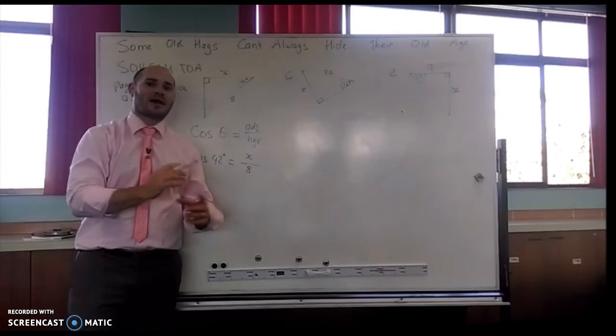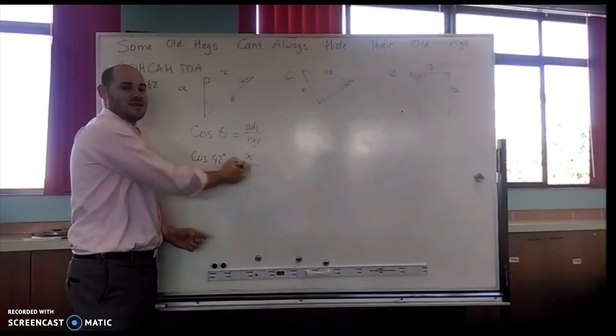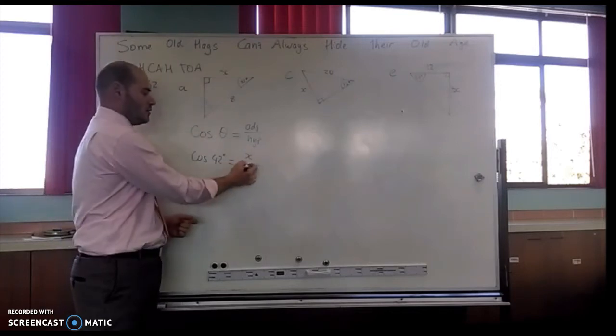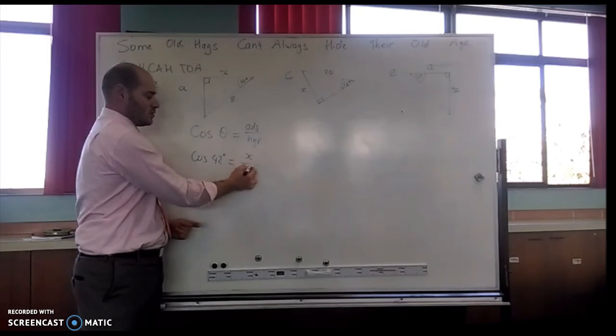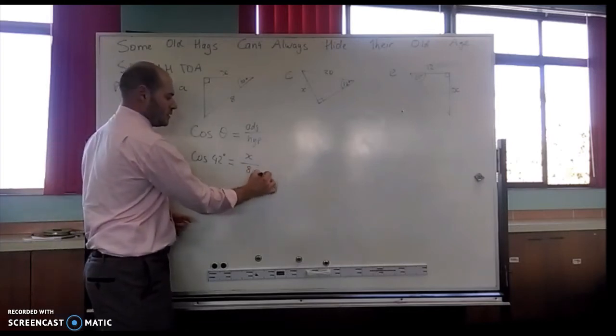Now here we go back to what we've always been talking about: isolating my variable. I want to know what x is. At the moment, I've got to get rid of what's next to it. So at the moment I've got divided by 8. The opposite of divided by 8 is times by 8.